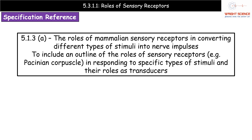Hi everyone and welcome to our video on the roles of sensory receptors. This is part of module 5 and therefore will be on papers 1 and potentially 3 on your exams. We're looking at specification reference 5.1.3a: the roles of mammalian sensory receptors in converting different types of stimuli into nerve impulses.